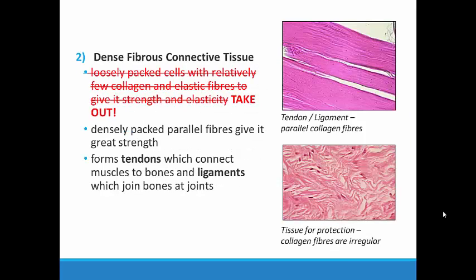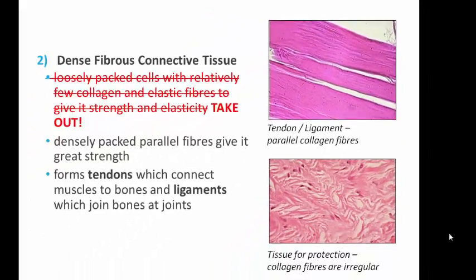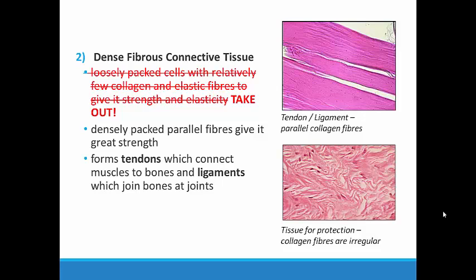Closely related to loose fibrous connective tissue is dense fibrous connective tissue. Please note that you should check this portion of your notes — there was originally a typo in the student notes provided. If the words in red on the screen are still in your notes, please take a moment to remove them as they refer to a previous slide. You should be able to see a difference between the dense fibrous connective tissue on this screen and the loose fibrous connective tissue from the previous screen. These fibers are much more organized, often in parallel formation, which gives the tissue much more strength. Examples of dense fibrous connective tissue include tendons, a type of tissue that connects muscles and bones, and ligaments, a type of tissue that joins bone to bone.